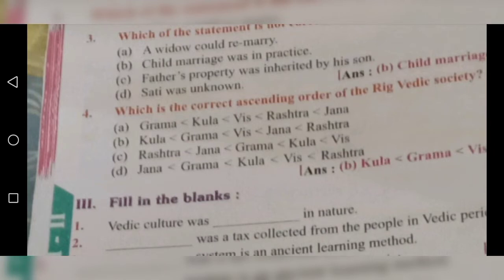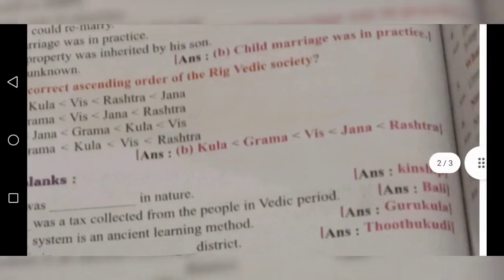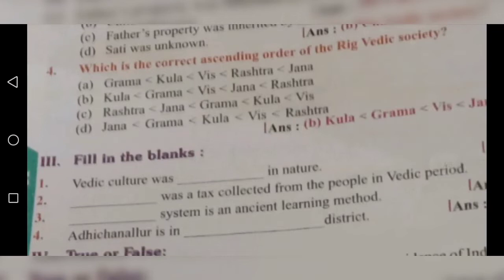Fourth question: Which is the correct ascending order of the Rig Vedic society? The options are various arrangements of Kula, Grama, Vis, Jana, and Rashtra. Option B is the correct answer. The correct ascending order is: Kula, Grama, Vis, Jana, Rashtra.